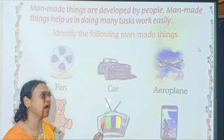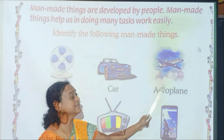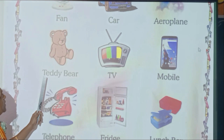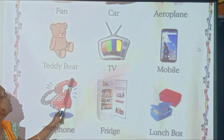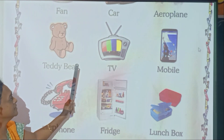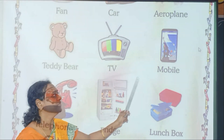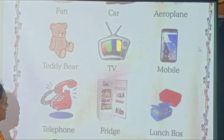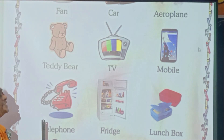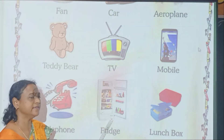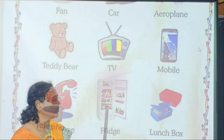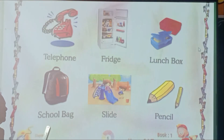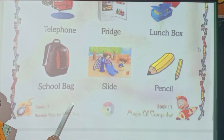This is a car. What is this? This is an aeroplane. What is this? Teddy bear. This is TV. This is mobile. What is this? This is telephone. What is this? Fridge. Yes, you know. What is this? Lunchbox. This is school bag.